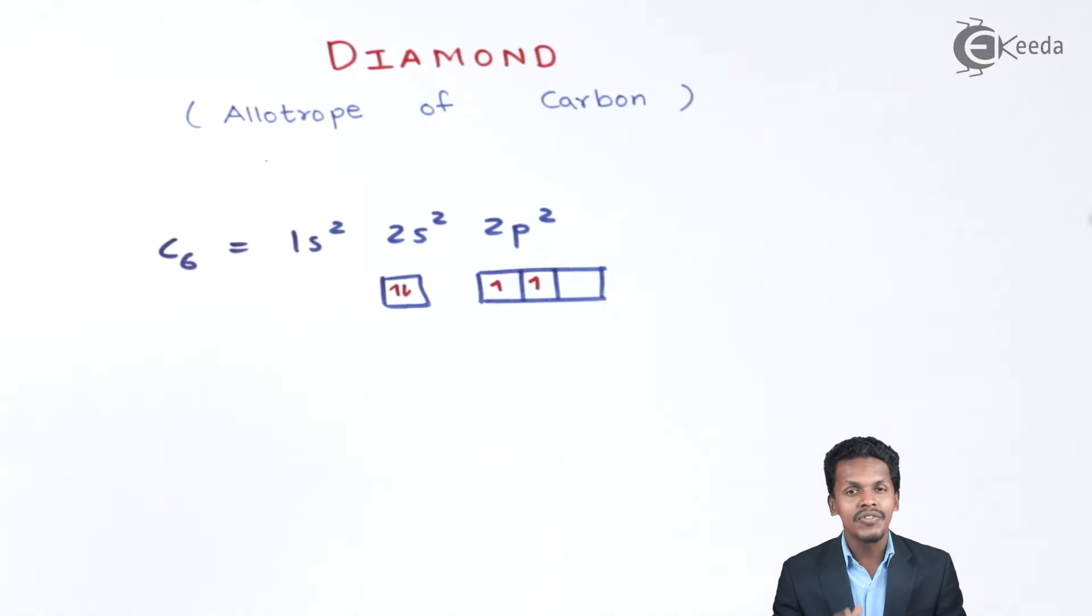This kind of structure makes the molecule more stable, and the bond angle between carbon-carbon is 109 degrees 28 minutes, which is the regular bond angle.